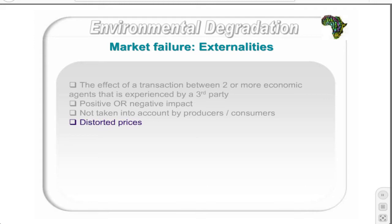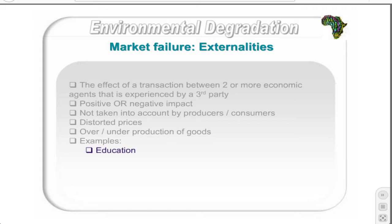Similarly, producers and consumers do not take into account the effect they have on others when an externality occurs, and thus the price of the good is distorted. This leads to either over- or under-production depending on whether the externality is positive or negative. For example, education is a positive externality, while pollution of water resources — such as a factory discharging untreated effluents into a river upstream from a village — is a negative externality causing poor water quality and increased health risks.